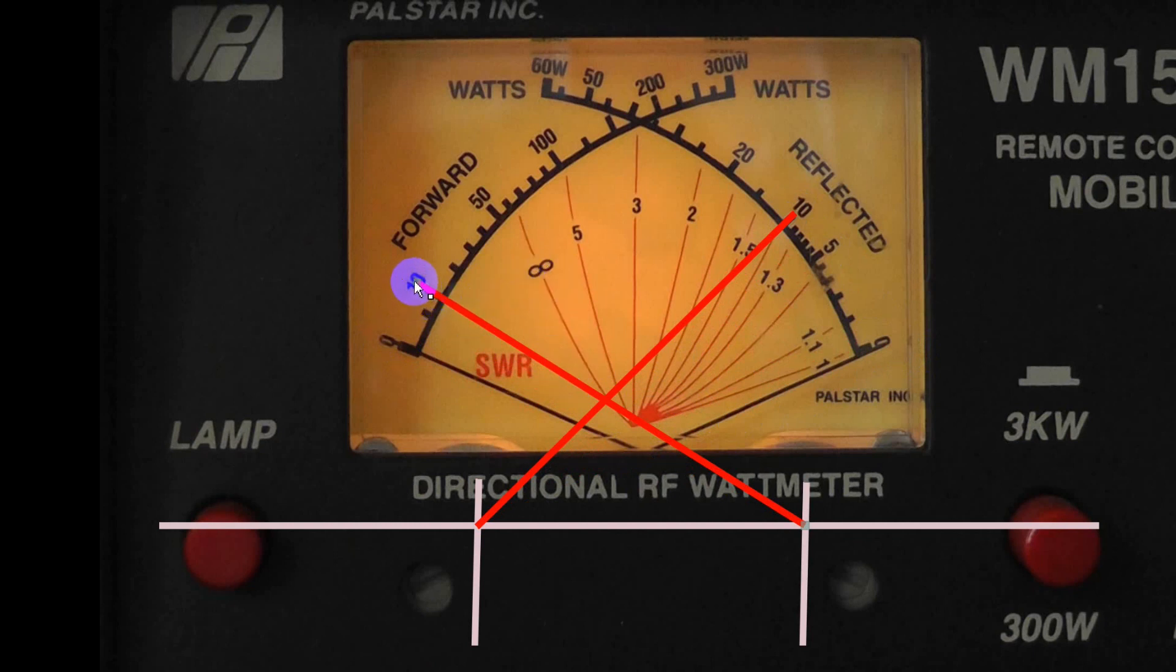Well let's take it up to 50 and we find we're in the middle between 2 and 3. If we take this up to 100 we're under 2. Take it up to 200 and we're a little bit over 1.5, and at 300 watts we're about 1.45 somewhere in there with that.